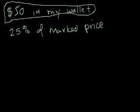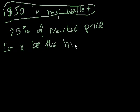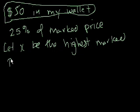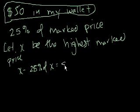So let's do a little bit of algebra. Let x be the highest marked price that I can afford. So if the sale is 25% off of x, we could say that the new price, the sale price will be x minus 25% of x equals the sale price.